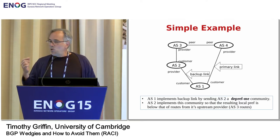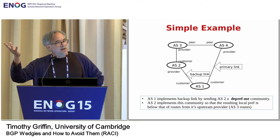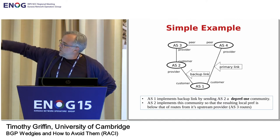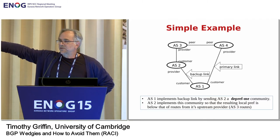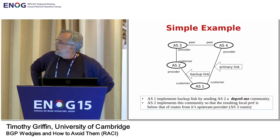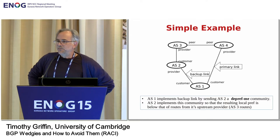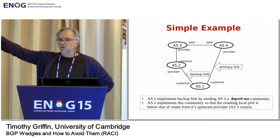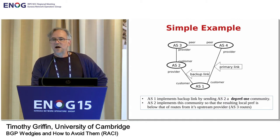Here's a really simple example. Suppose I have AS1 here, which is kind of like a customer. I'm going to use customer-provider-peer here just loosely, but you could also imagine these same situations happening when all of these ASes are controlled by the same organization for traffic engineering purposes. The basic idea is we have a backup link and a primary link for some prefix originated by AS1, and the backup link is implemented with a de-pref-me community — that is, AS1 sends to AS2 some community that says lower my preference. This is a pretty common use of communities.